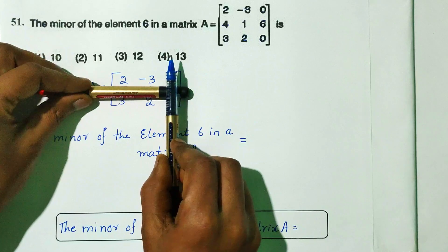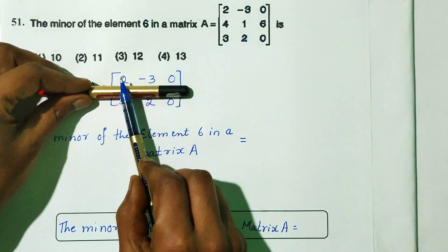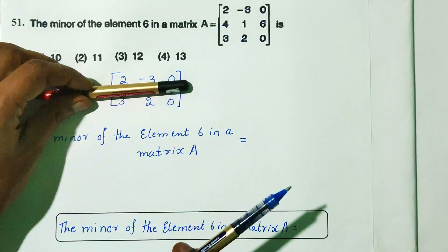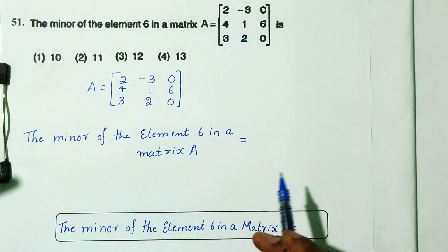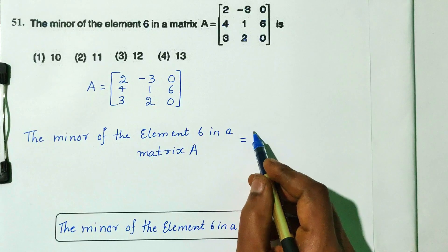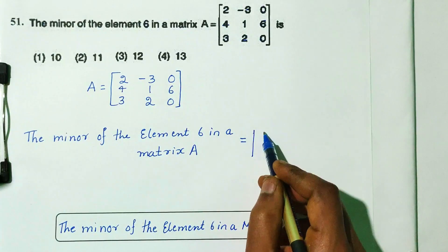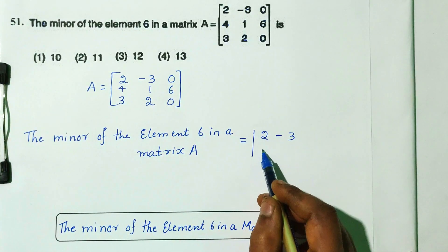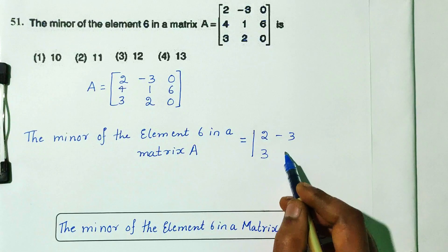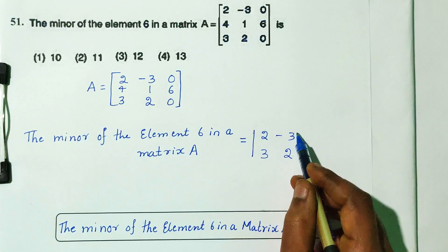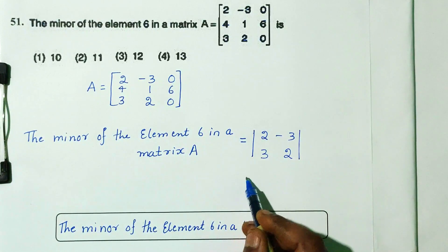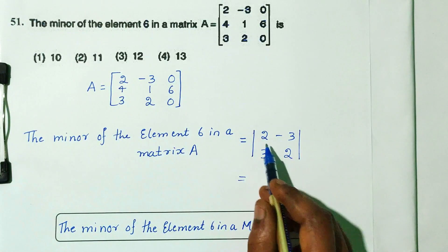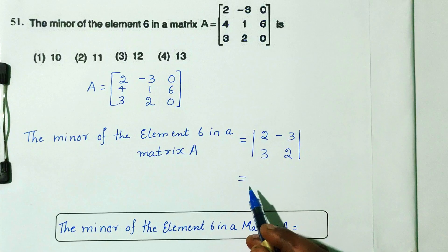After closing the row and column of element 6, the remaining elements form the 2x2 matrix: 2, minus 3, 3, 2. The principal diagonal elements are 2 and 2, and the remaining elements are minus 3 and 3.